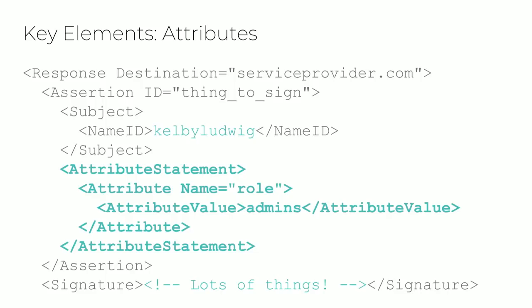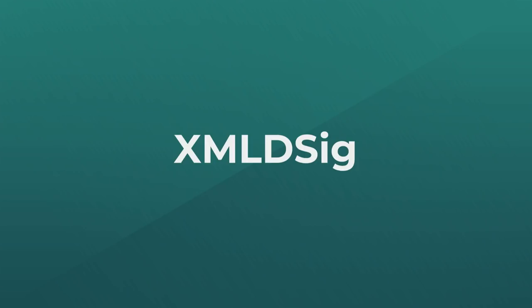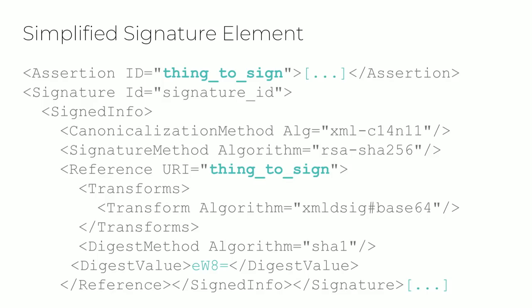The next interesting set of attributes are the attribute statements and attributes. An attribute statement is just a set of attributes — general properties about a user that the identity provider may want to convey to the service provider, such as a user's email for notification purposes or access control roles. Finally, we need a signature to prove this information wasn't changed by a malicious user agent, which is where the signature element in the XML digital signature standard, or XML DSIG, comes into play. These signatures are included within SAML messages passed between systems.